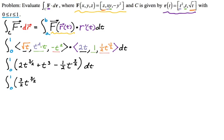Now we can just reverse the power rule. It's 3/2 times 2/5 and t^(5/2), and then 1/4 t^4. Plug in 1, you get something. Plug in 0, you get nothing. So we're just going to end up with 3/5 plus 1/4 from plugging in 1, which is 17/20, and that's the entire line integral.